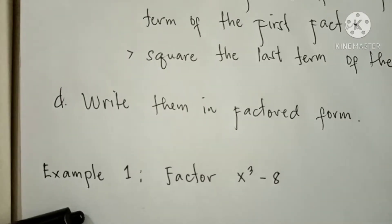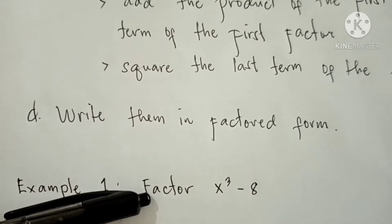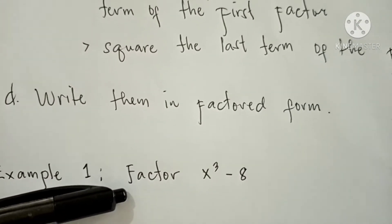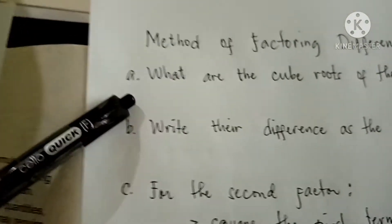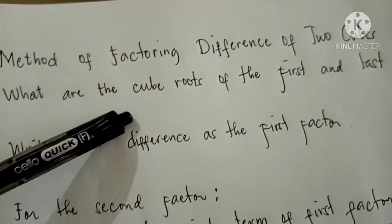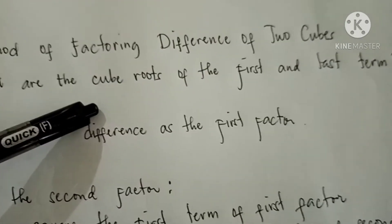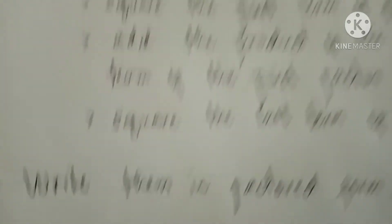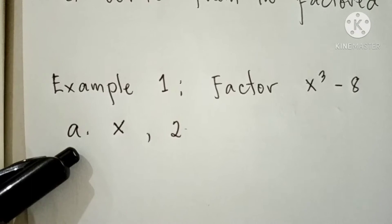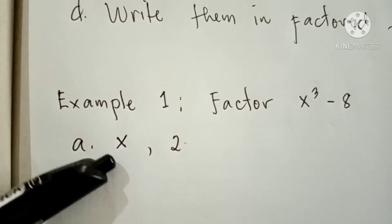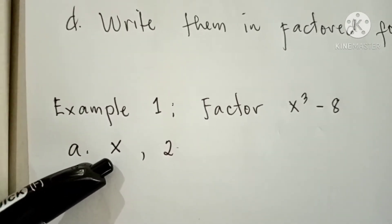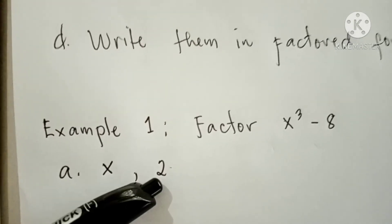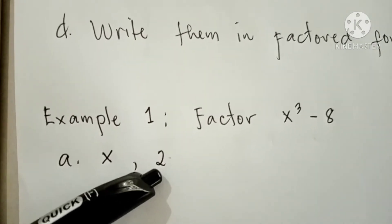Here is Example 1. Factor x cubed minus 8. We are going to follow the first step — get the cube roots of the first and last term. For the first step, we got x as the cube root of x cubed, and 2 as the cube root of 8.